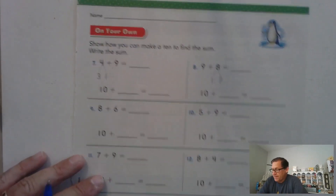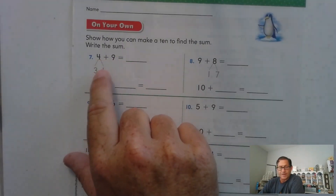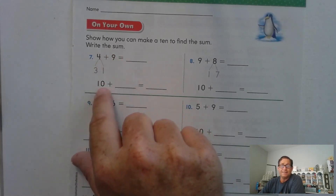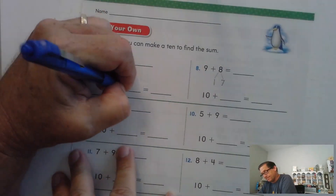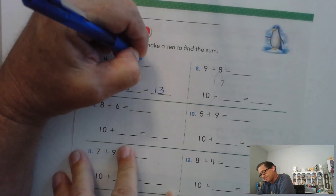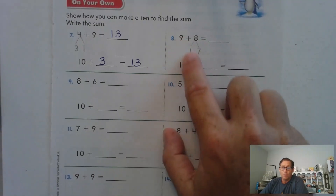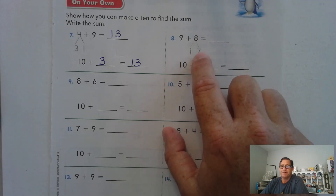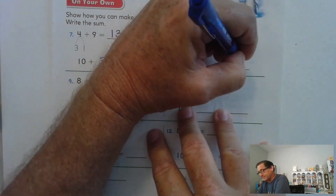Let's look at page 131. Show how you can make a 10, find the sum. They broke the four up into three and one — why three and one? Because nine plus one is 10. Now add the remaining part of the four, which is three. So four and nine is 13. Nine plus eight: we need one more to get to a 10, so let's break up the eight as one plus seven. Nine and one is 10, plus the seven gives us 17.